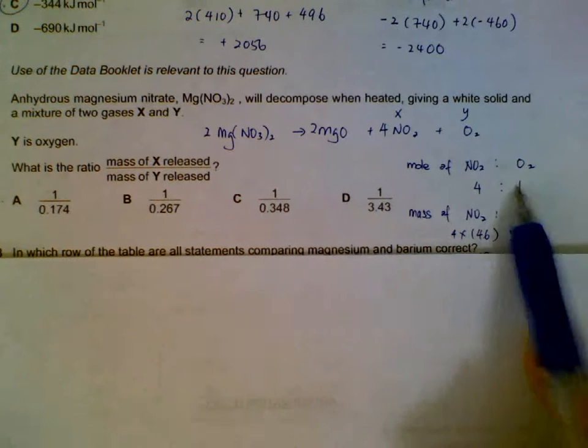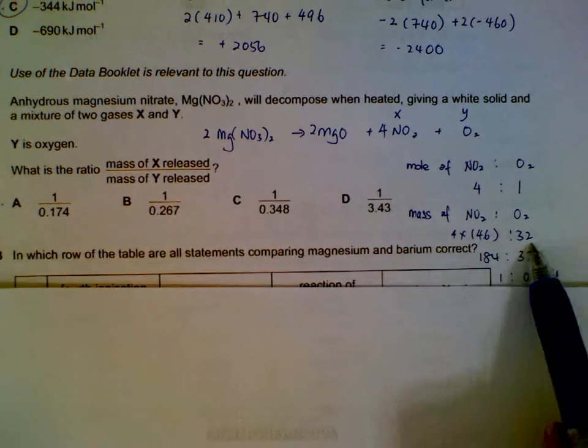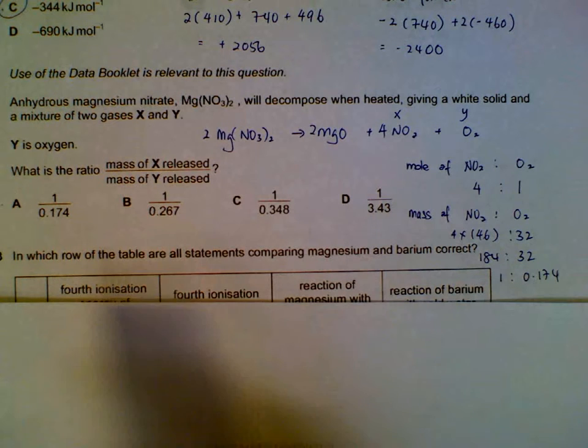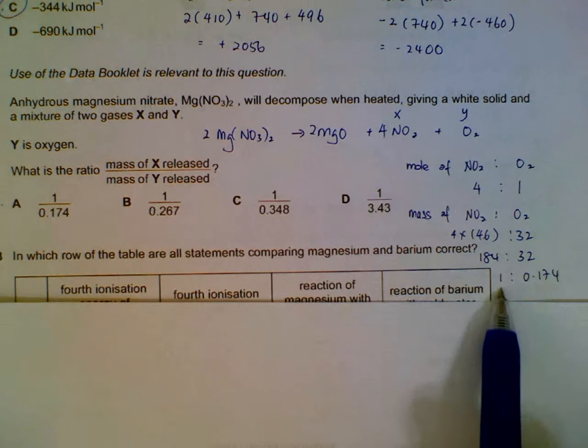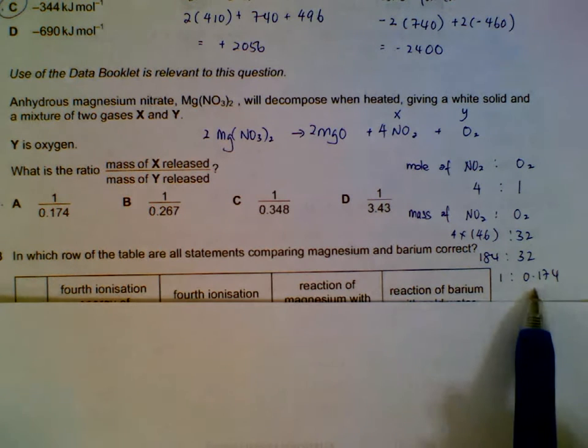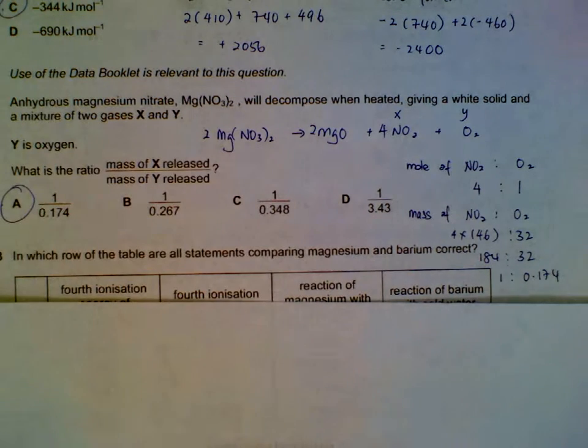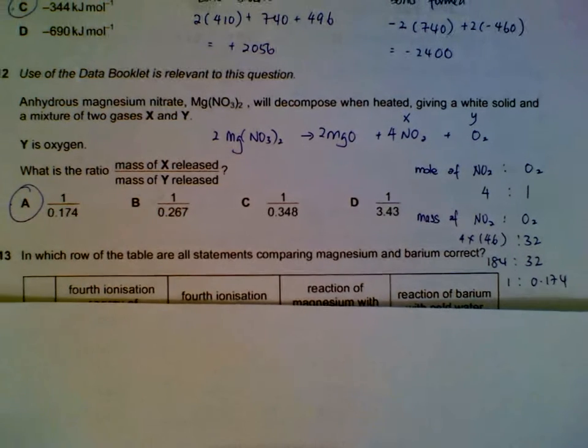We convert to mass because that's what the question wants. Four moles multiplied by Mr of NO₂, one mole multiplied by Mr of oxygen gives 184 to 32. We simplify by dividing both by 184, so it's 1 to 0.174.